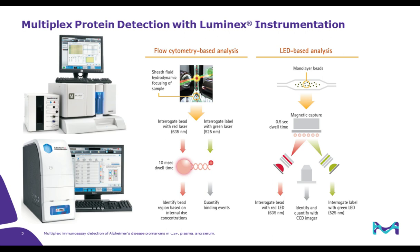We have a few different instruments capable of reading a Luminex-based multiplex assay. Pictured here on the top is the Luminex 200. We also have a FlexMap 3D instrument; both use a flow cytometry-based analysis system. Pictured below is the MagPix, which uses CCD imaging. Our multiplex assays can be run on both types of instruments, and although the fluidics and optical components may differ, the assay principle remains the same.